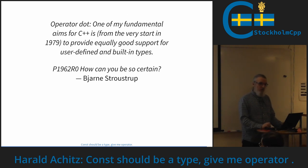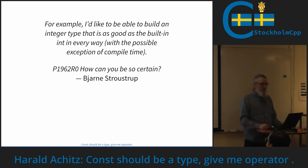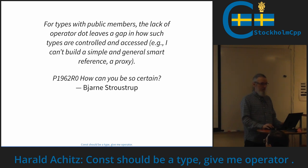And this is from a paper by Bjarne Stroustrup from last November. Sometimes Bjarne writes a paper — remember the Vasa — and this paper is called 'How can you be so certain?' The whole paper is worth reading. In it we find: 'operator dot'. One of his fundamental aims for C++ from the very start in 1979 was to provide equally good support for user-defined and built-in types. For example, he'd like to be able to build an integer type that is as good as the built-in int in every way, with the possible exception of compile time.